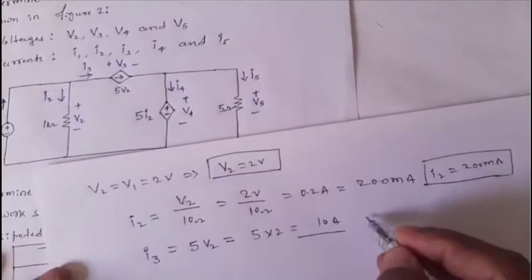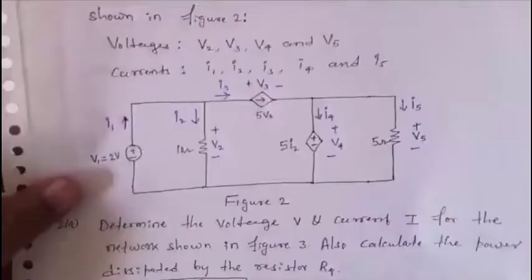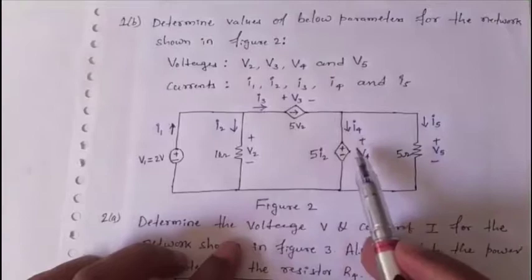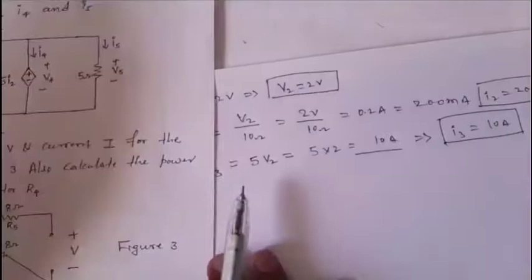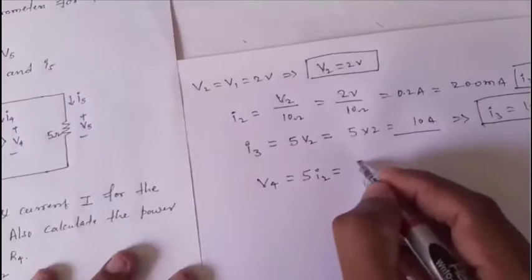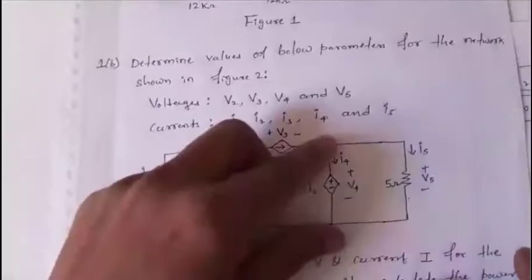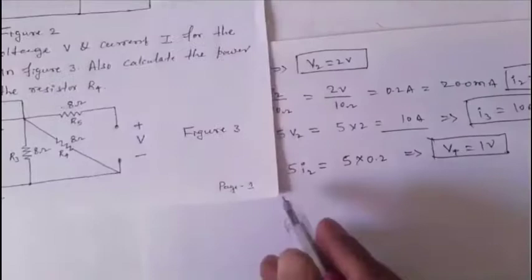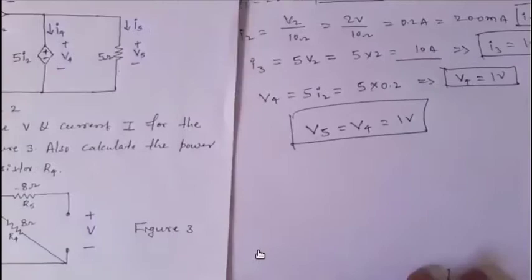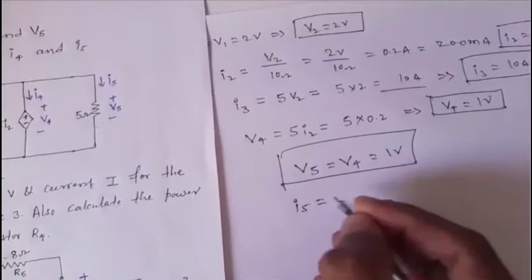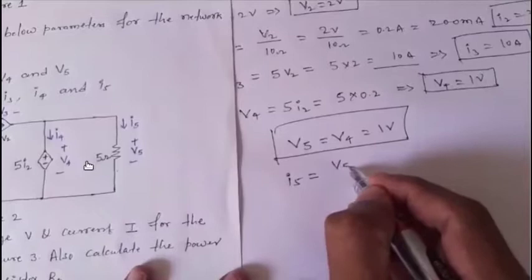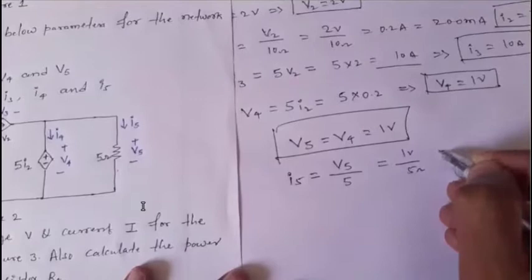With i2 found, calculate the dependent voltage v4 = 5 × i2 = 5 × 0.2 = 1 V. Since v4 and v5 are in parallel, v5 = v4 = 1 V. Then i5 = v5 / 5 Ω = 1 / 5 = 0.2 A or 200 mA.